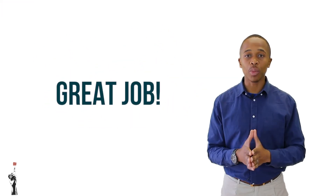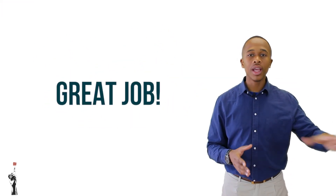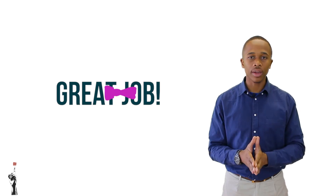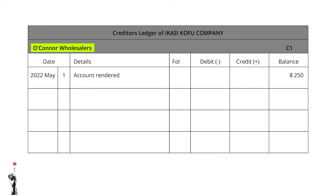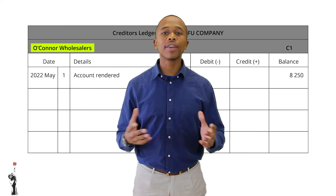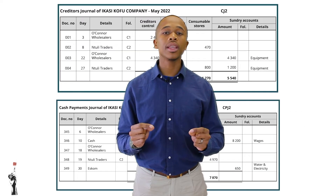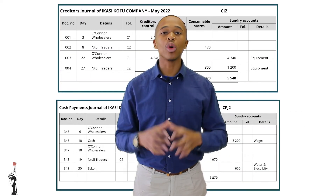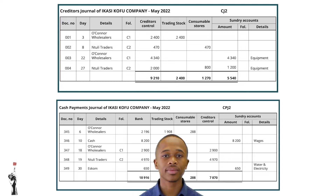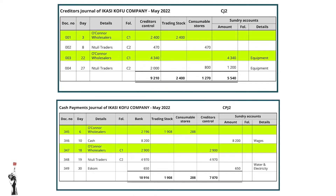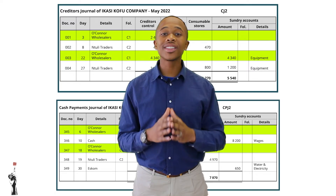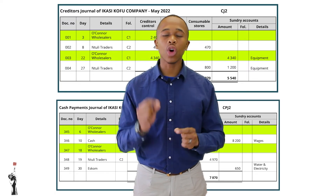Great job — we're finished now with the general ledger. Let's now look at the creditors ledger. Our first creditor is O'Connor's Wholesalers. Remember the balance was already recorded earlier in this lesson. Looking at the journals and specifically the transactions that have to do with O'Connor's Wholesalers, as we can see in the tables there are four transactions. Let's see if you recorded this correctly on the creditors ledger.